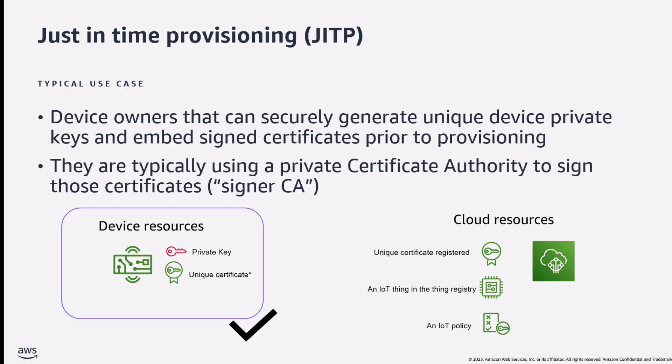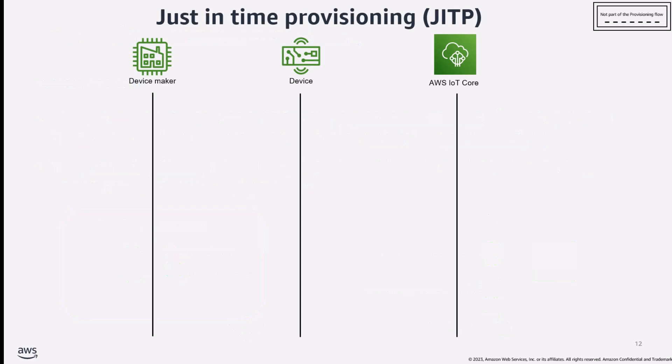Let's see how JITP works behind the scenes. There are three major stakeholders: the device maker, the device or device fleet, and AWS IoT Core, the MQTT broker. There are two critical prerequisite steps before the proper JITP flow can start for each device. First, the signer CA needs to be registered through AWS IoT Core, creating the trust relationship between AWS IoT Core and the certificate authority that signs all the certificates for the devices to be provisioned. This is absolutely necessary for future client certificate authentication to be successful.